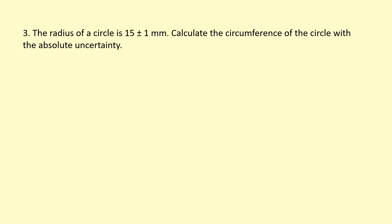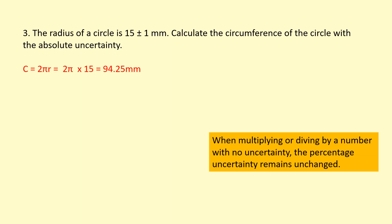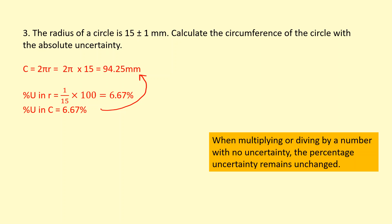The radius of a circle is 15 plus or minus 1 millimeter. Calculate the circumference of the circle with the absolute uncertainty. The circumference is 2πr. The issue here is that I'm multiplying by constants, and constants don't have any uncertainty. When you multiply or divide by a number with no uncertainty, the percentage uncertainty remains unchanged — though the absolute uncertainty does change. The percentage uncertainty in r is 6.67%, so the percentage uncertainty in the circumference is also 6.67%. Working out 6.67% of 94.25 gives 6.28. The final answer is 94 plus or minus 6 millimeters.